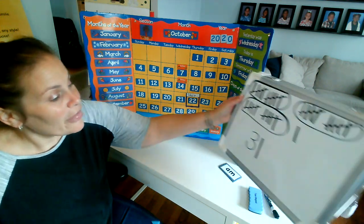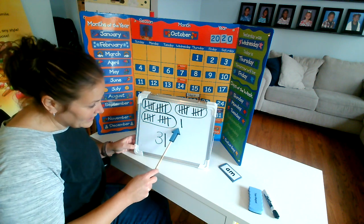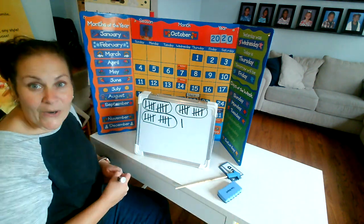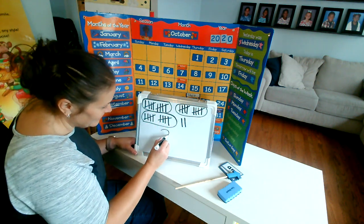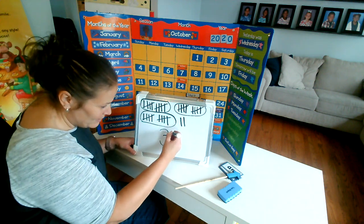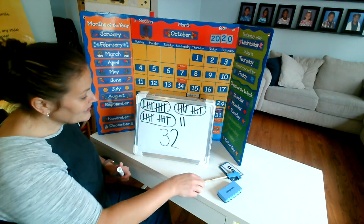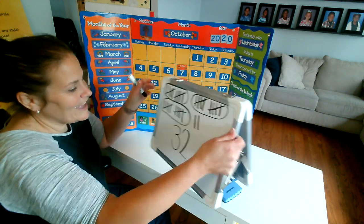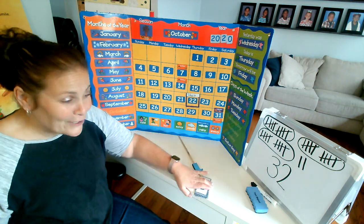Yesterday we were in school 31 days — three groups of 10: 10, 20, 30, and one leftover one. But today it's one day more. Let's add our tally — one day more. So now we have three groups of 10 and two leftover ones. 32 days of school! Thirty-two days in kindergarten. You are 32 days smarter. I am so proud of all of your hard work and sticking with our virtual learning. Great job, friends.